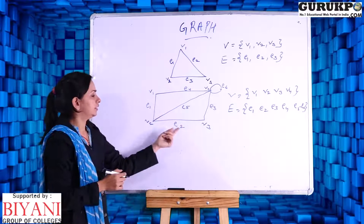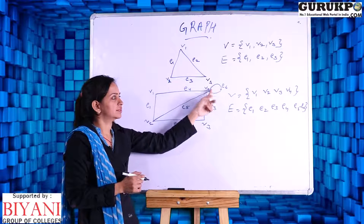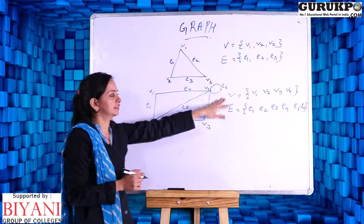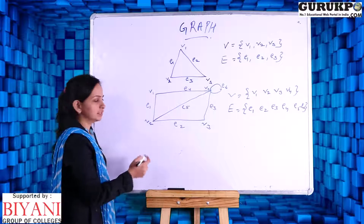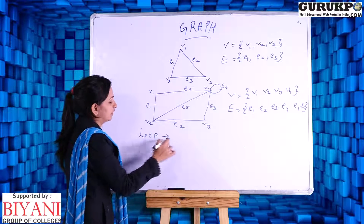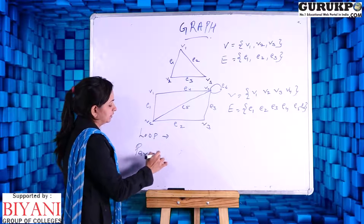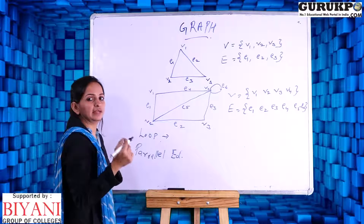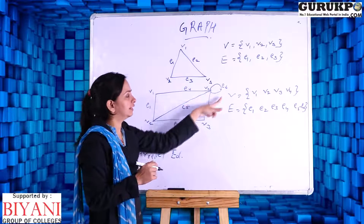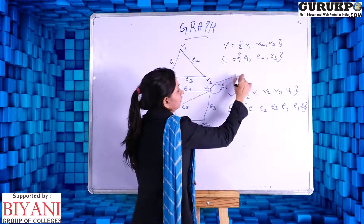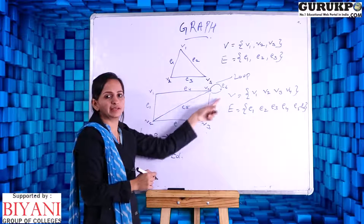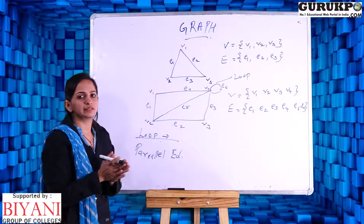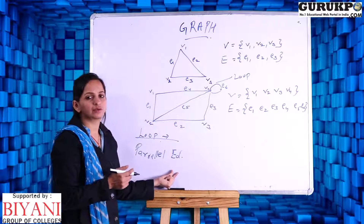There are 6 edges: E1, E2, E3, E4, E5, and this is also an edge — an edge starting from vertex V4 and ending at vertex V4. So this is a special type of edge. There are two types of special edges: the first one is called a loop and the second one is called parallel edges. A loop is an edge which starts and ends at the same vertex.